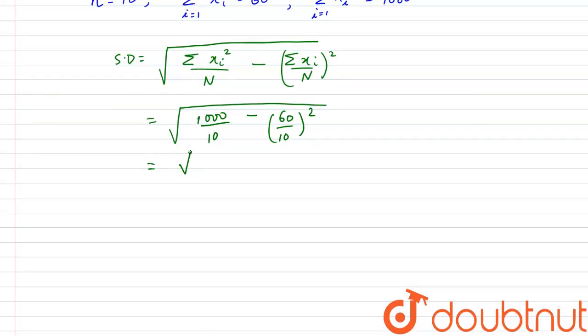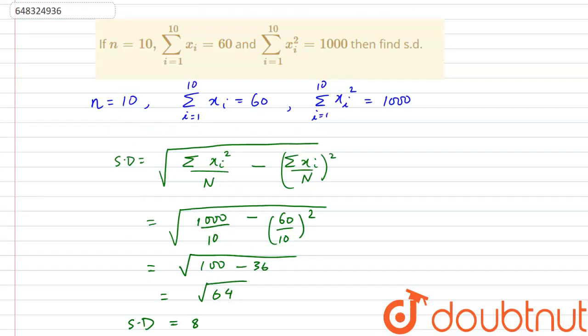This is equal to the square root of 100 minus 36 which is square root of 64 which is equal to 8. So the standard deviation for our data is 8. And this is our solution.